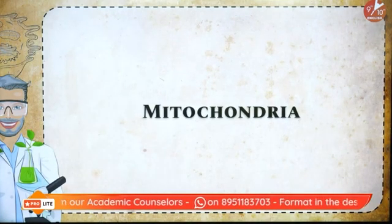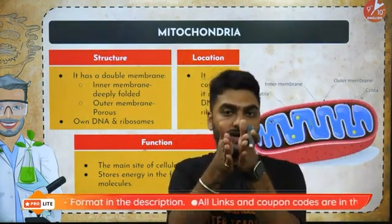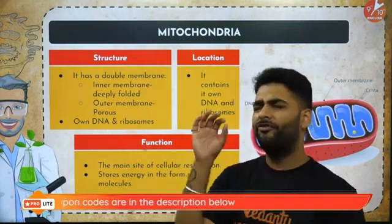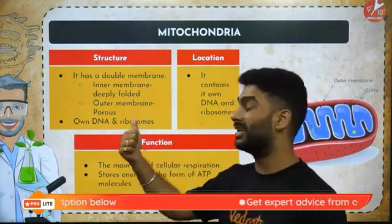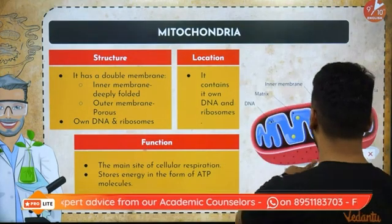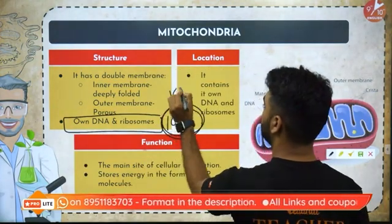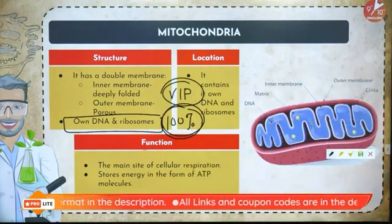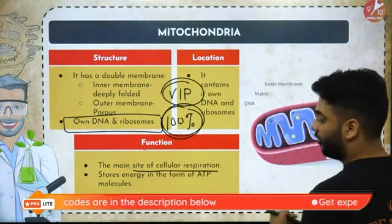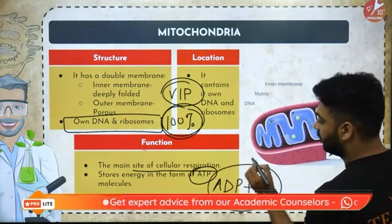Now we talk about the powerhouse of the cell — mitochondria. Mitochondria has a double membrane: the inner membrane is deeply folded and the outer membrane is porous. Very importantly, mitochondria has its own DNA and ribosomes — this is a hundred percent guaranteed exam question: name the cell organelle having its own DNA and ribosomes. It is mitochondria. It is the main site of cellular respiration, where ATP is formed from ADP and inorganic phosphate.